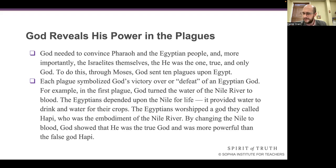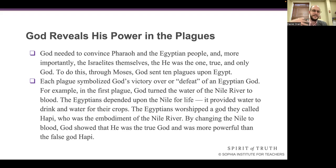Each plague symbolized God's victory over or defeat of an Egyptian god. All these signs and wonders are a direct conflict of the God of Israel overcoming the supposed gods of Egypt. For example, in the first plague, God turned the water of the Nile River to blood. The Egyptians depended upon the Nile for life — it provided water to drink and water for their crops. The Egyptians worshipped a god they called Hapi, who was the embodiment of the Nile River. By changing the Nile to blood, God showed he was more powerful than the false god Hapi.